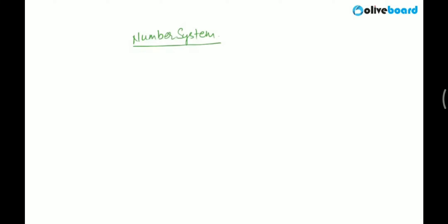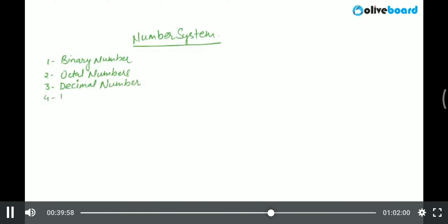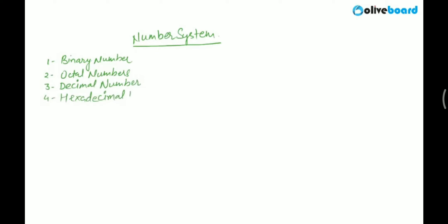This is again an important point. We are going to talk about four different types of numbers: binary, octal, decimal, and hexadecimal. What we are going to focus on is conversion from one number system to another — from decimal to binary or binary to decimal, from decimal to octal or octal to decimal, or from decimal to hexadecimal or hexadecimal to decimal.